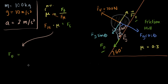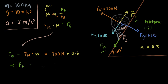Taking the formula and writing it clearly: force of friction F_f equals normal force times coefficient of friction. Plugging in the numbers: 700 N times 0.3. Solving for that, the magnitude of friction equals 210 N. So that is the force of friction.